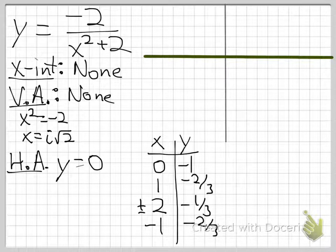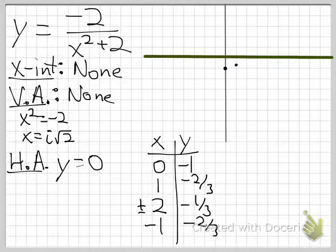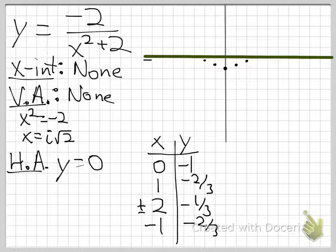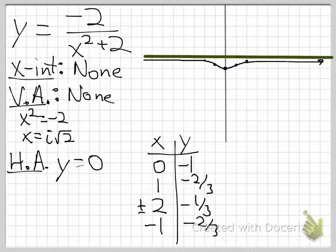Plotting the points at (0, negative 1), (1, negative 2 thirds), and (2, negative 1 third), the graph gets closer and closer to the asymptote y equals 0 as x increases. That's the graph for this example.